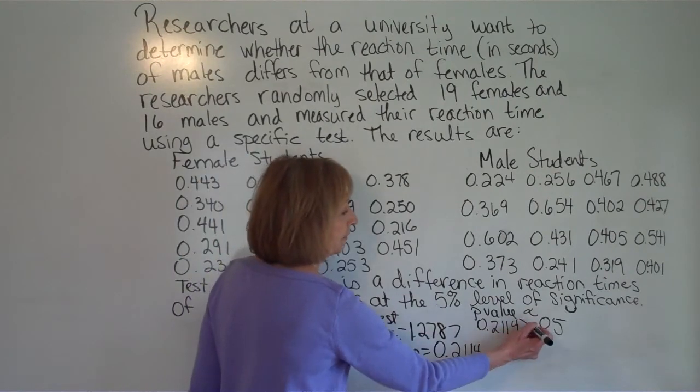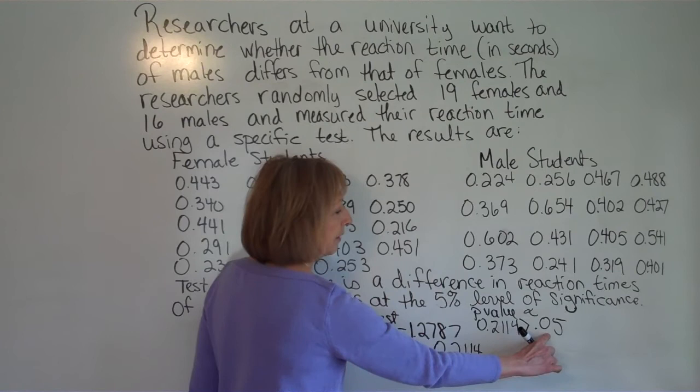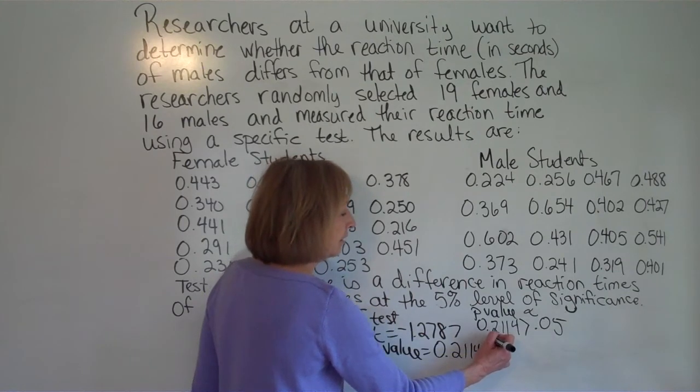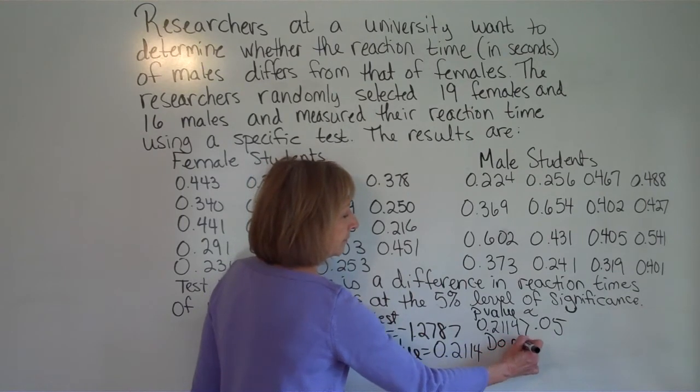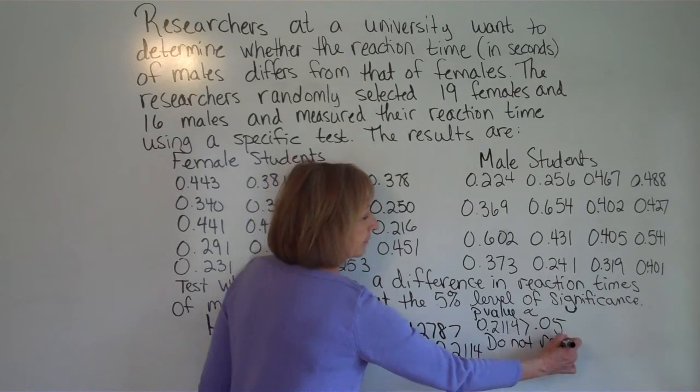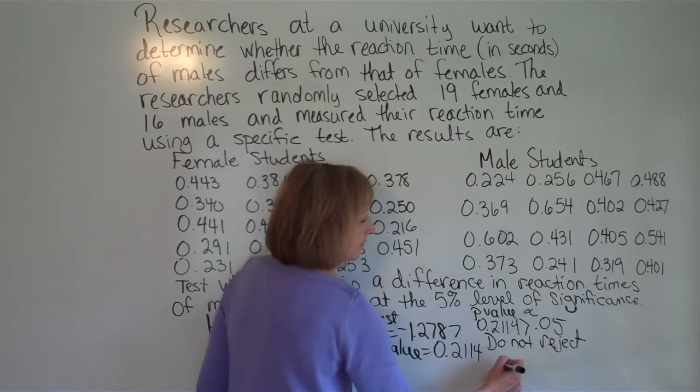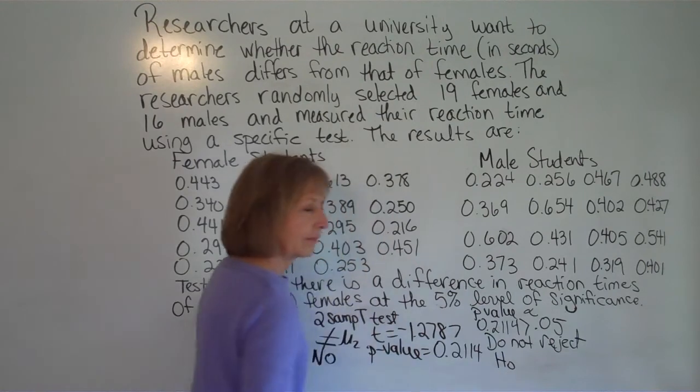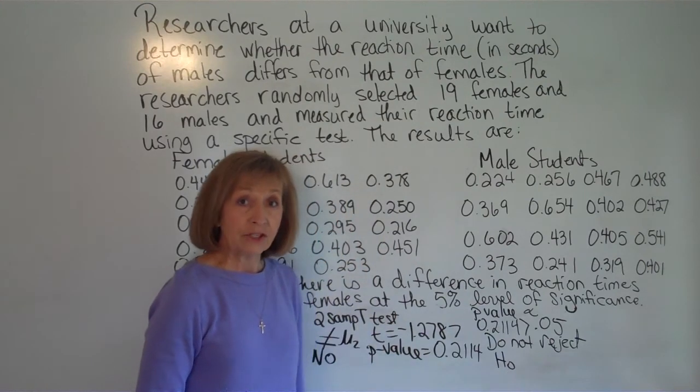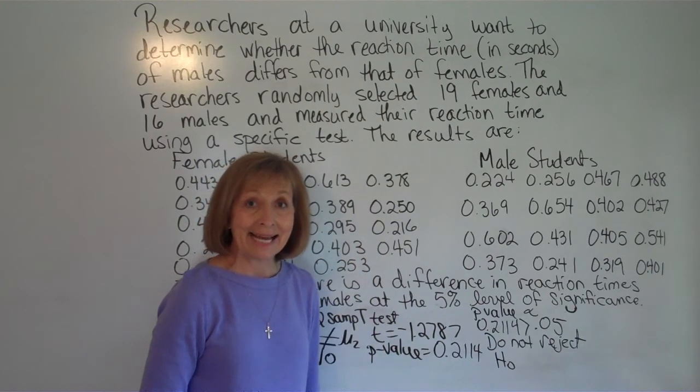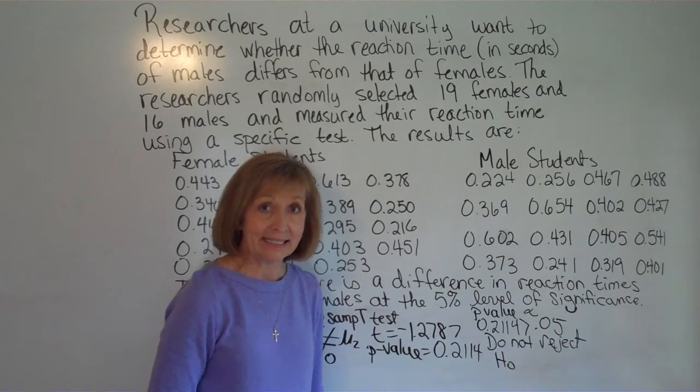And this p value is bigger, the 0.2 is bigger than 0.05. So we cannot reject the null. And since we cannot reject the null the data is not significant to indicate the alternate.